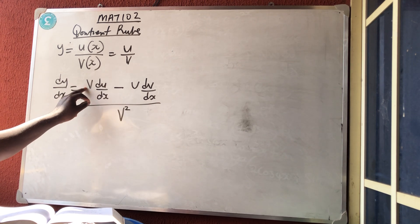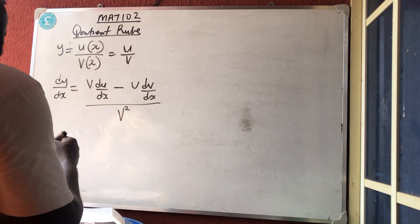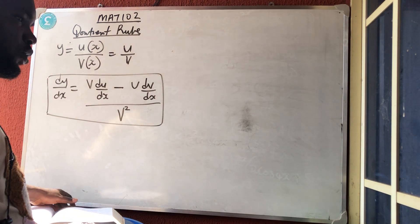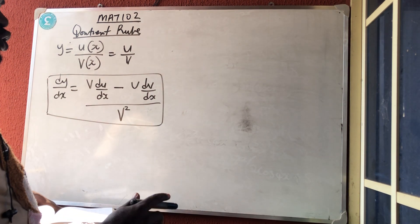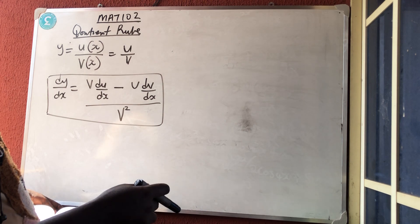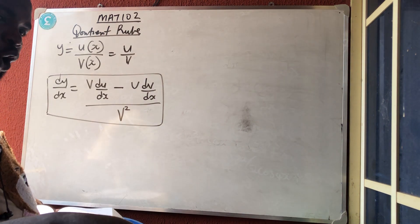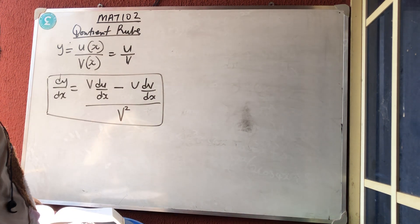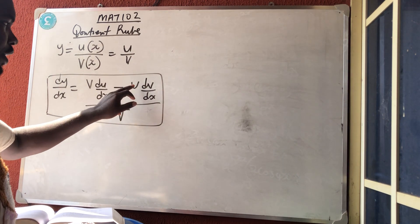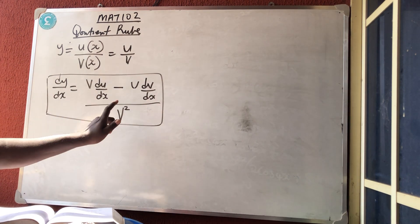So the formula is: v·(du/dx) minus u·(dv/dx), all over v squared. You start from the denominator and end in the denominator. The shortcut says: leave the denominator, differentiate the numerator, minus leave the numerator, differentiate the denominator, all over denominator squared.